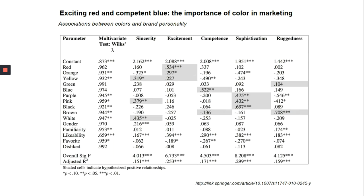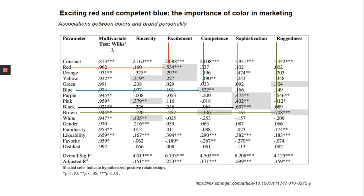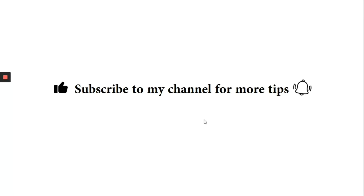To conclude: red is associated with excitement, blue with competence, and black with sophistication. If you liked this video, don't forget to share it and press the bell icon so you don't miss any related videos from this series.